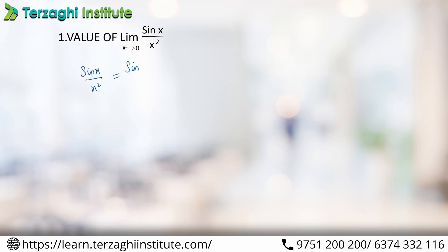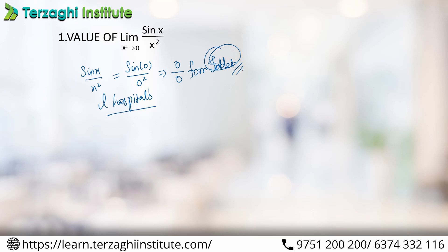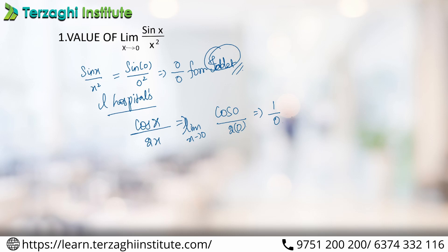L'Hôpital's Rule example: sin(x) divided by x squared — substituting 0: sin(0)/0² = 0/0 form, which is indeterminate. To solve using L'Hôpital's Rule, differentiate numerator and denominator separately: differentiate sin(x) to get cos(x), differentiate x² to get 2x. Apply limit as x tends to 0: cos(0)/(2×0) = 1/0. Since 1/0 is infinity regardless of sign, the limit does not exist.